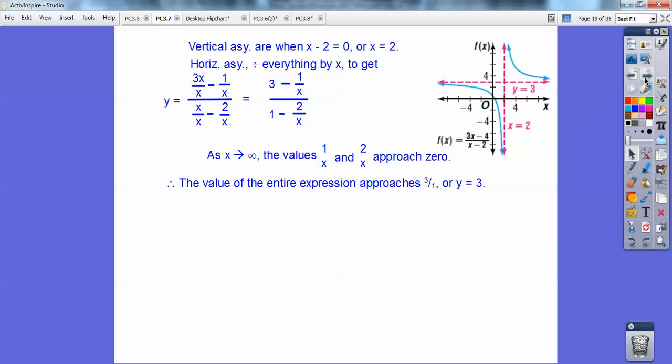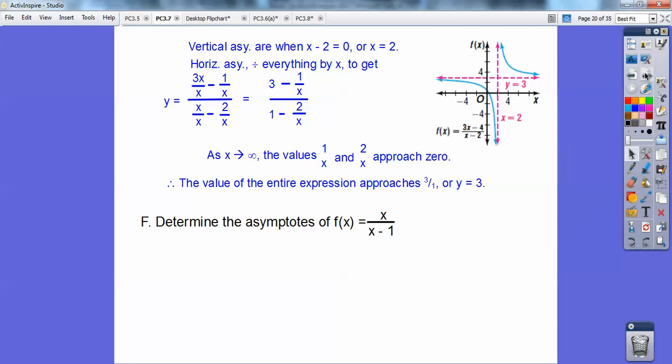So there's my asymptote. x equals 2 right there. I'm sorry, y equals 3 right there. Sorry, that's this one. And then x equals 2 is that one right there. The verticals are always what makes the denominator equals 0.